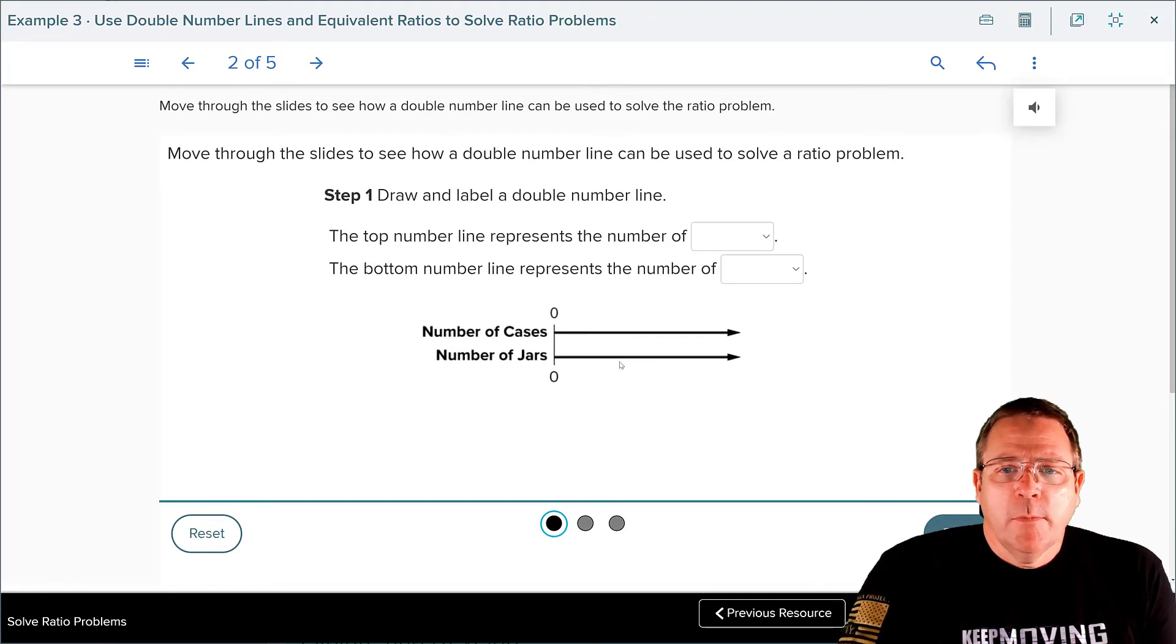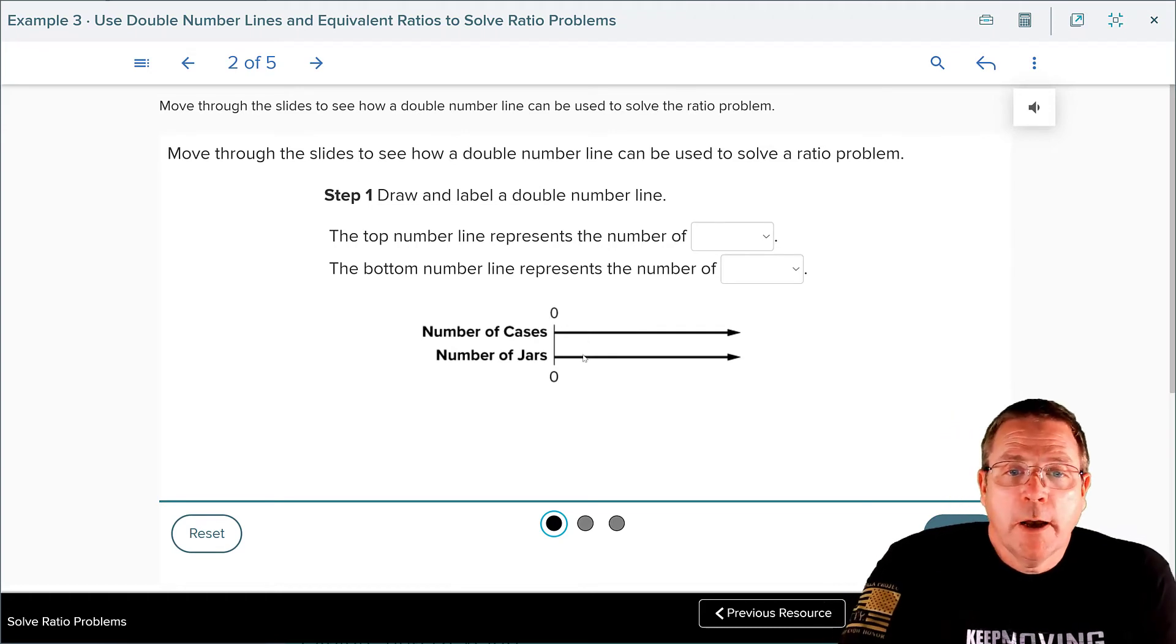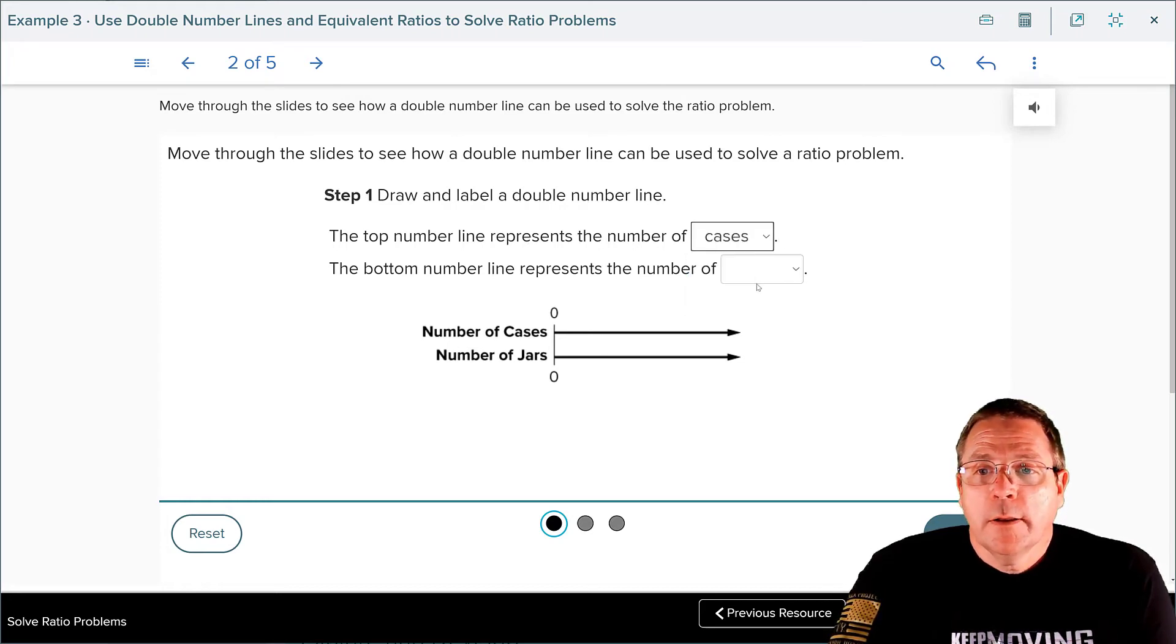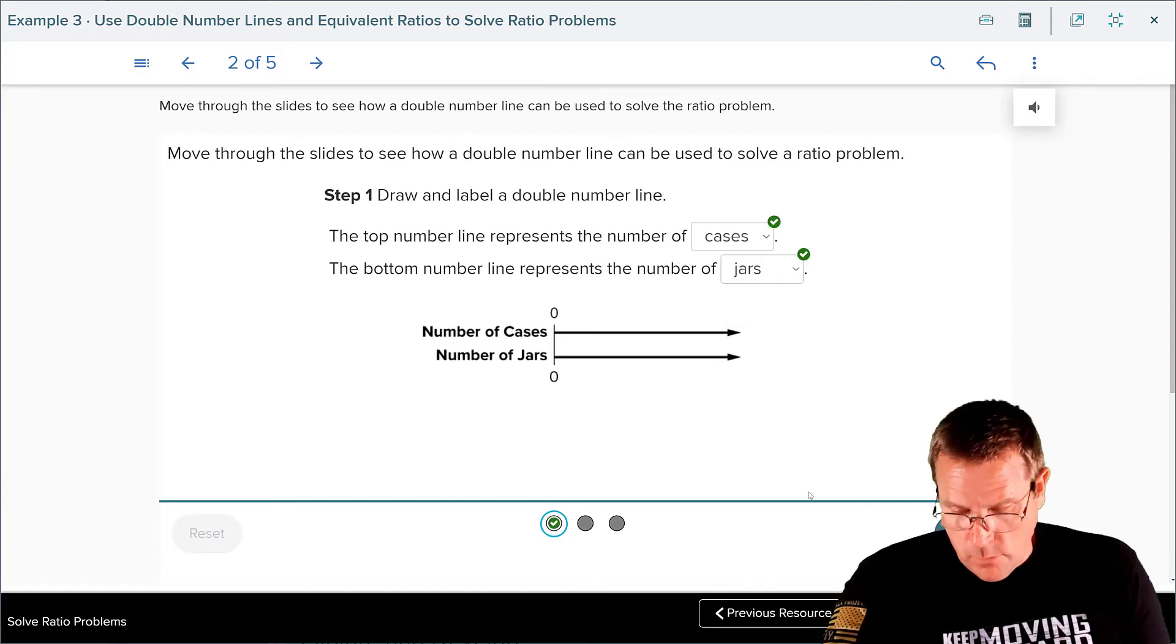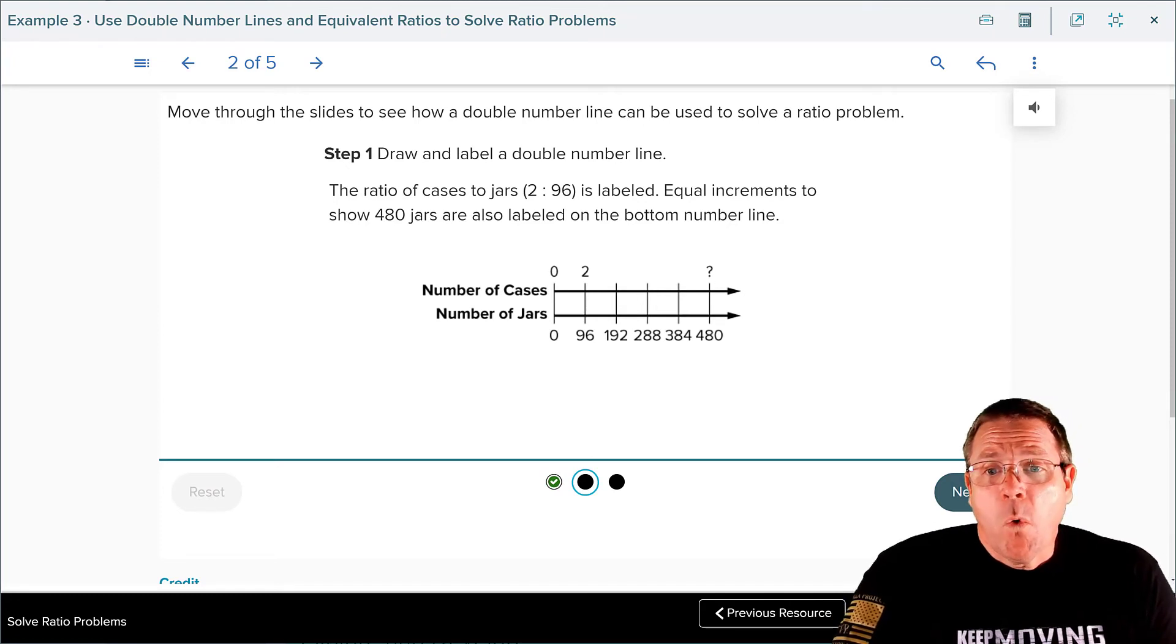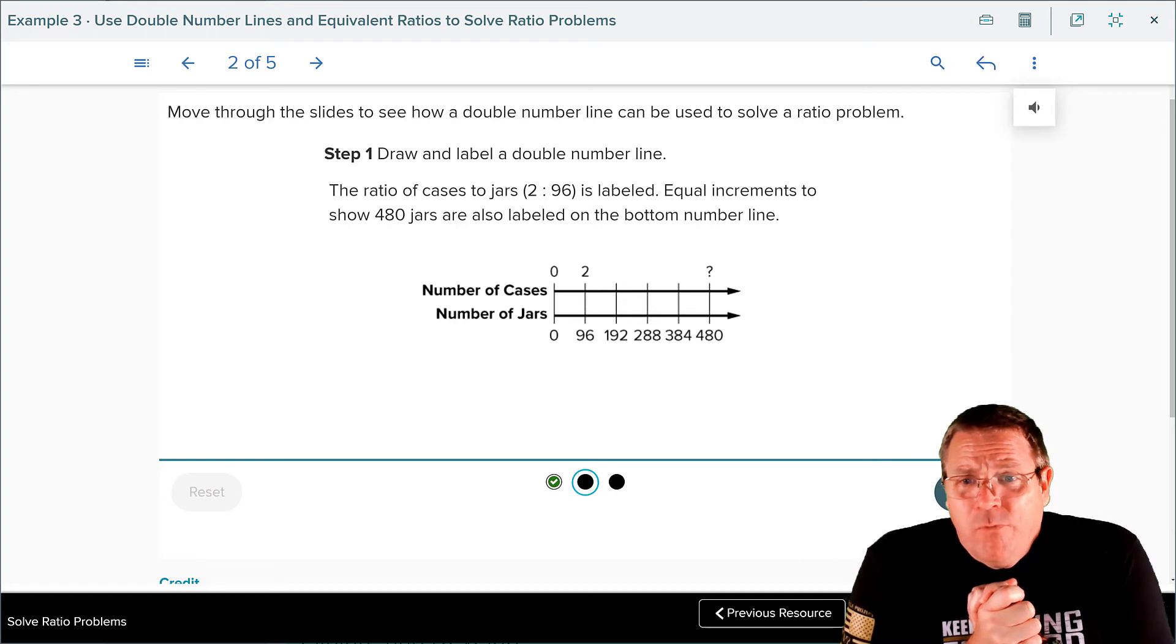All right, so we have the double number lines already drawn initially here with the cases on top and the number of jars on bottom. So, the top line represents the number of cases, the bottom line represents the number of jars. We're going to hit our check button and all that checks good. From here we're going to hit our next button and then that, wow, where on earth did all that come from?